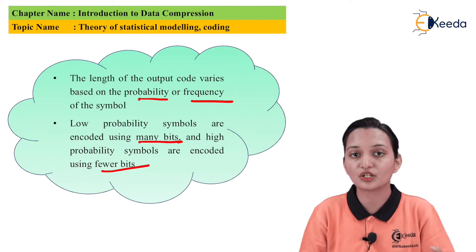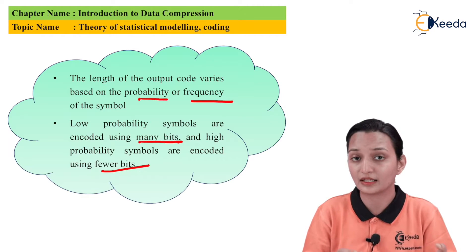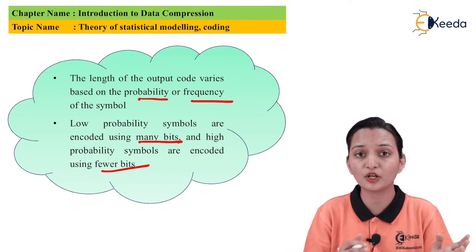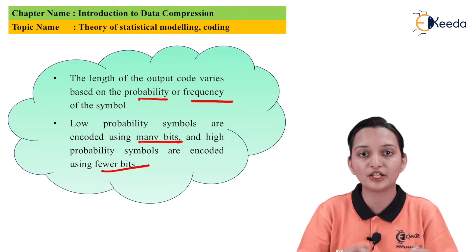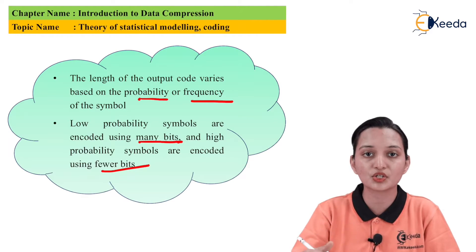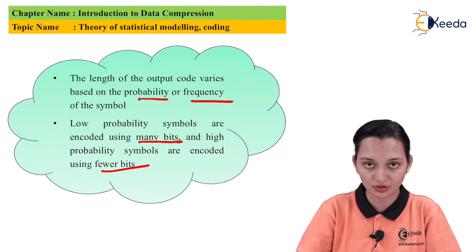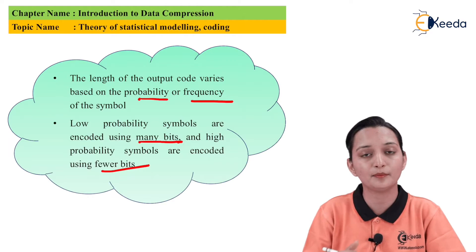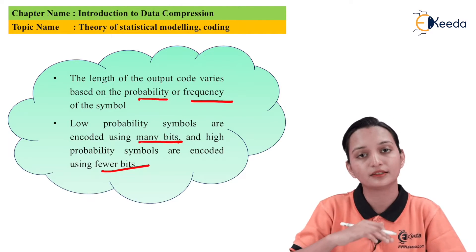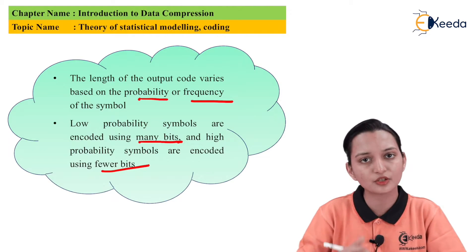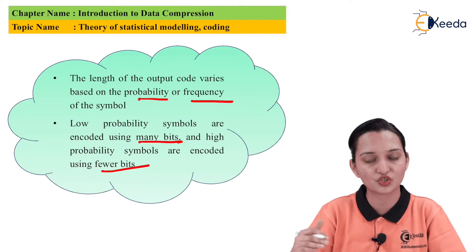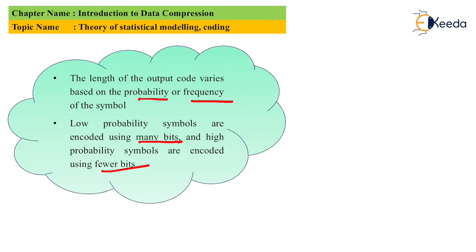If your string has a lower number of symbol sequences and lower probability of occurrence — meaning less repetition — then data will still get compressed, but that will be less beneficial than when repetition is high.